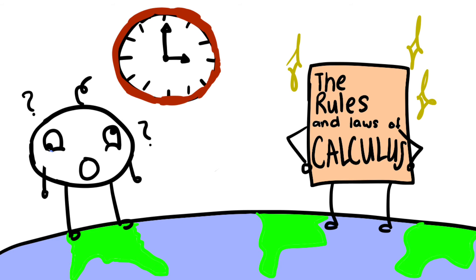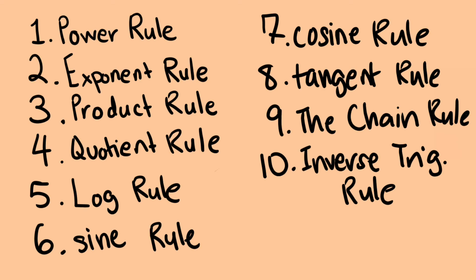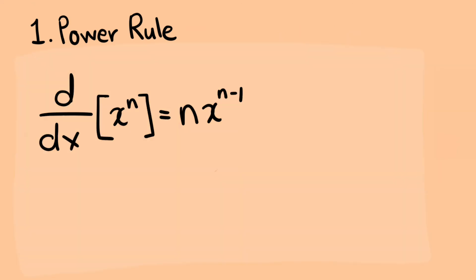There are many rules in calculus that apply to derivatives and integrals, but for derivatives specifically, there are 10 specific rules or concepts you need to know to master derivatives. Each of these rules applies to every different type of function. The power rule is the most basic one out of all of them, and it's essentially taking the exponent and multiplying it with the coefficient of the variable and subtracting away 1 from the exponent.